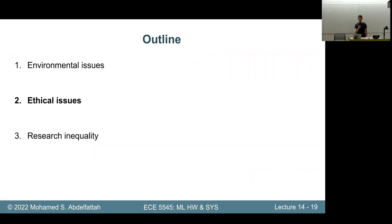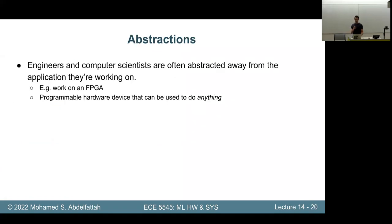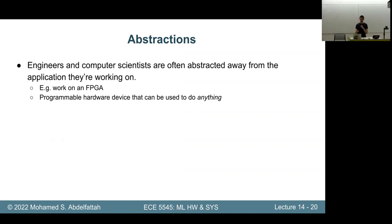We talked a bit about the environment, which took more time than I thought. Let's quickly run through some ethical issues. These are admittedly less related to systems — when you're designing a system, not many choices you have will have an impact on how it's used in the end. But maybe that's the main thing I want to highlight: you're operating under an abstraction of creating a general-purpose chip or coding a general-purpose library, but you should also be aware of the bad things it can be used for.